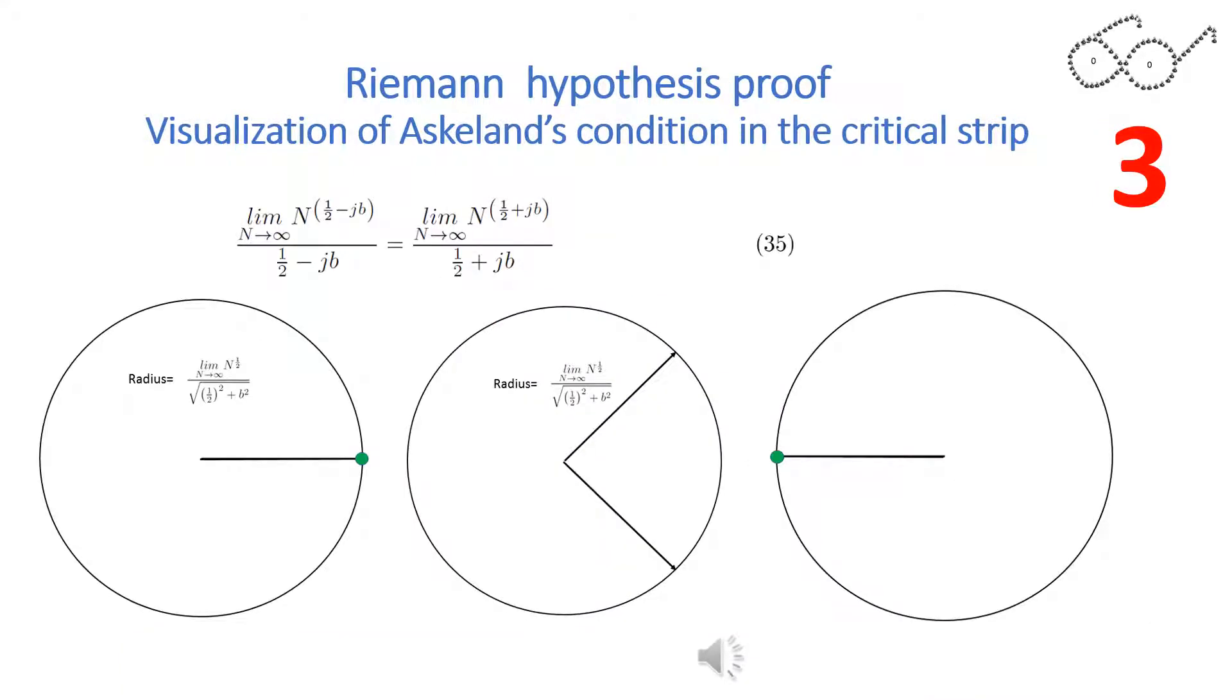As you perhaps saw in video number 2, Askeland's condition can be reworked to equation 35, which are two complex conjugate vectors rotating in opposite directions. The vectors are equal when they pass each other at 0 and 180 degrees. This can only happen on the critical line where the two vectors have the same length. The green dots indicate that Askeland's condition is 0.